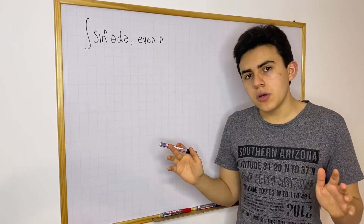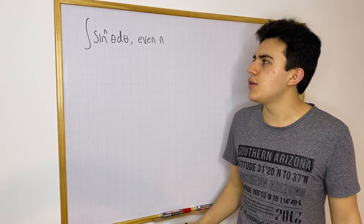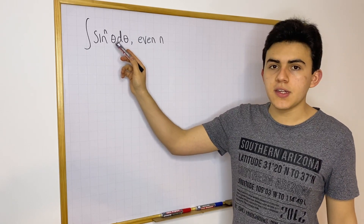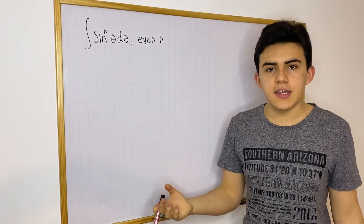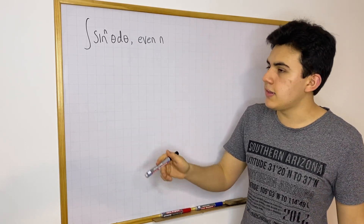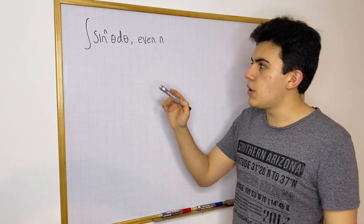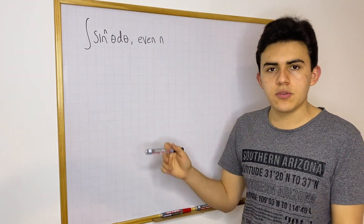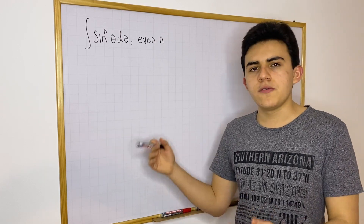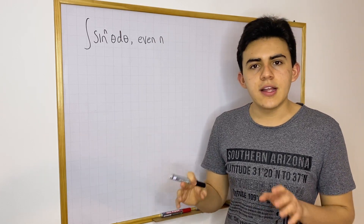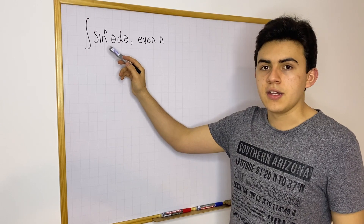Hopefully by now you know that you can integrate odd powers of sine by simply factoring out one sine and then rewriting the remaining even power of sine in terms of cosine — using one minus cosine squared to some power. That is a strategy you can use to integrate odd powers of sine.